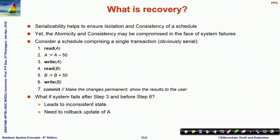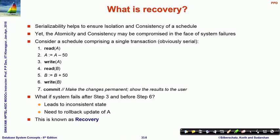What happens if the system fails after step 3 — after A has been written — but before step 6 when B has been written? Naturally, 50 dollars will simply disappear because the debit from A is visible but the credit to B is not. This leads to an inconsistent state. To handle that, we need to roll back the transaction, undoing the changes already done — restoring A to its original value. This process is known as the recovery process.